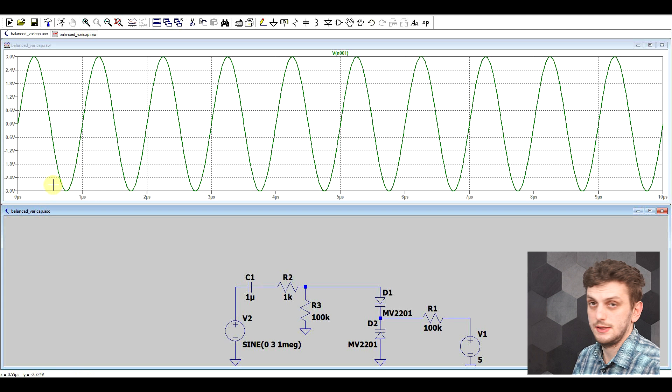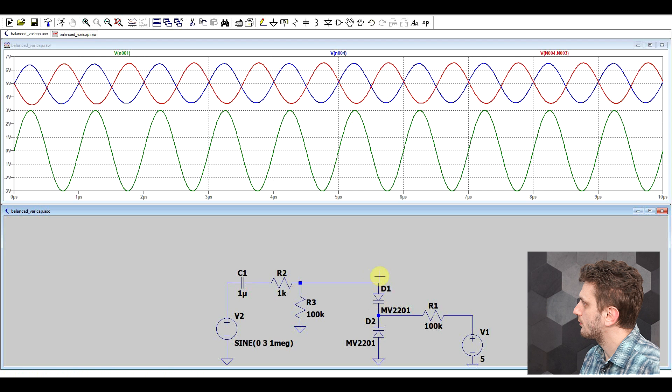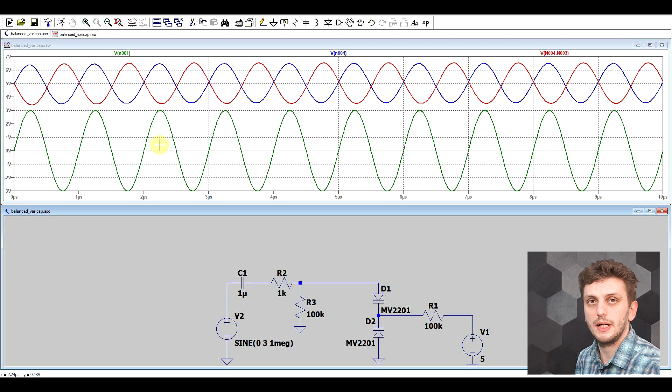So if we run this thing, so first of all we have quite a large AC signal being applied, a high frequency signal, so it's a 6 volt peak to peak signal. But now if we look at what happens on each of the diodes, so with blue we have the lower diode, and with red we have the voltage drop on the upper diode, we can see that the AC voltage that's being applied is not applied equally.